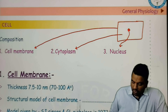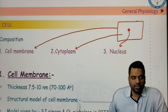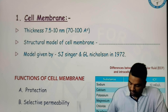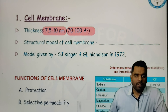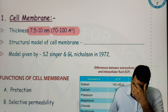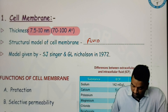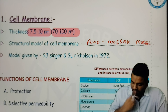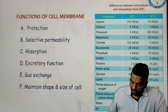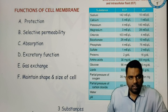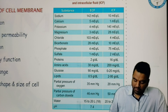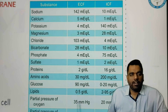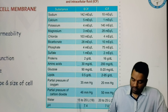So now we are going to discuss how the cell membrane looks like, what is the thickness of the cell membrane, and what is the structural model of the cell membrane. This cell membrane is mainly made up of two substances. The thickness of the cell membrane is 7.5 to 10 nanometers, or 7200 angstroms. The structural model of the cell membrane was given by two doctors named Singer and Nicholson in 1972, and they gave this model the name fluid mosaic model.